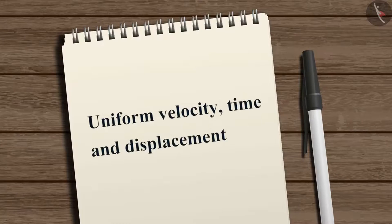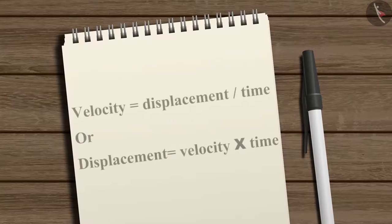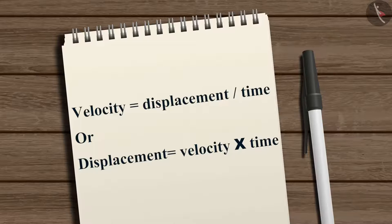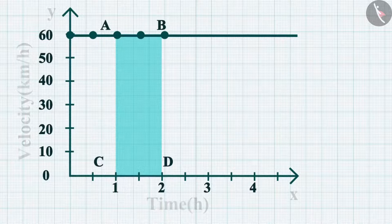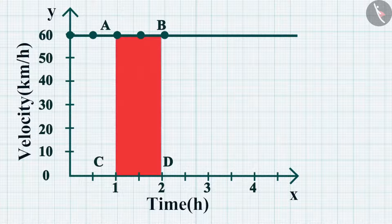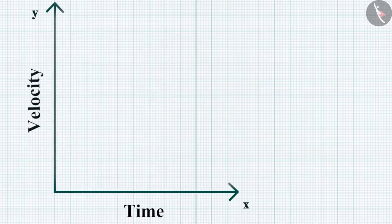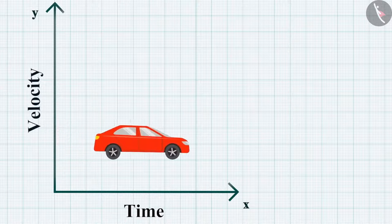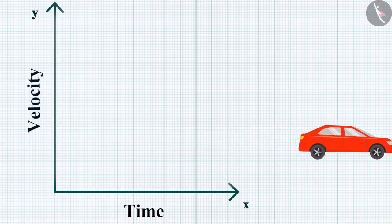Earlier, we studied the relation among uniform velocity, time, and displacement. That is, velocity equals displacement divided by time, or displacement equals velocity multiplied by time. Hence, the area enclosed by the velocity-time graph and the time axis is equal to the magnitude of the displacement. As the car is moving in a single direction, the magnitude of displacement is equal to the distance covered.